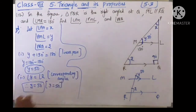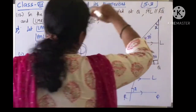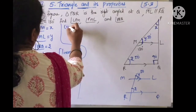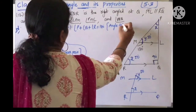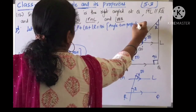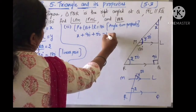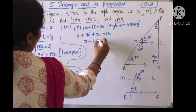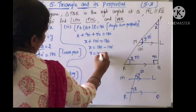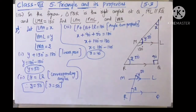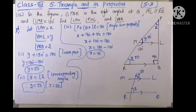Now using the angle sum property in triangle PQR: angle P plus angle Q plus angle R equals 180. X plus 90 plus 50 equals 180, so X plus 140 equals 180, giving X equals 40 degrees. Therefore angle LPM equals 40 degrees, angle PML equals 50 degrees, and angle PRQ equals 50 degrees.